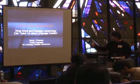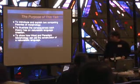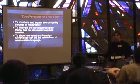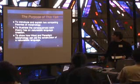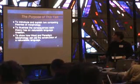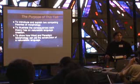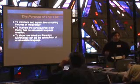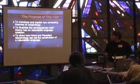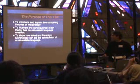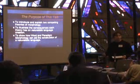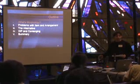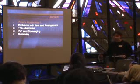The purposes of this talk will be threefold. The first is going to be to introduce and explain two competing theories of morphology that are out there right now. Second, to illustrate the consequences each theory has for constructing a naturalistic conlang. I don't have anything to say about Elvish or Klingon per se. And also to show specifically how word and paradigm morphology can aid the construction of a naturalistic language. I have an outline so you know where we are.